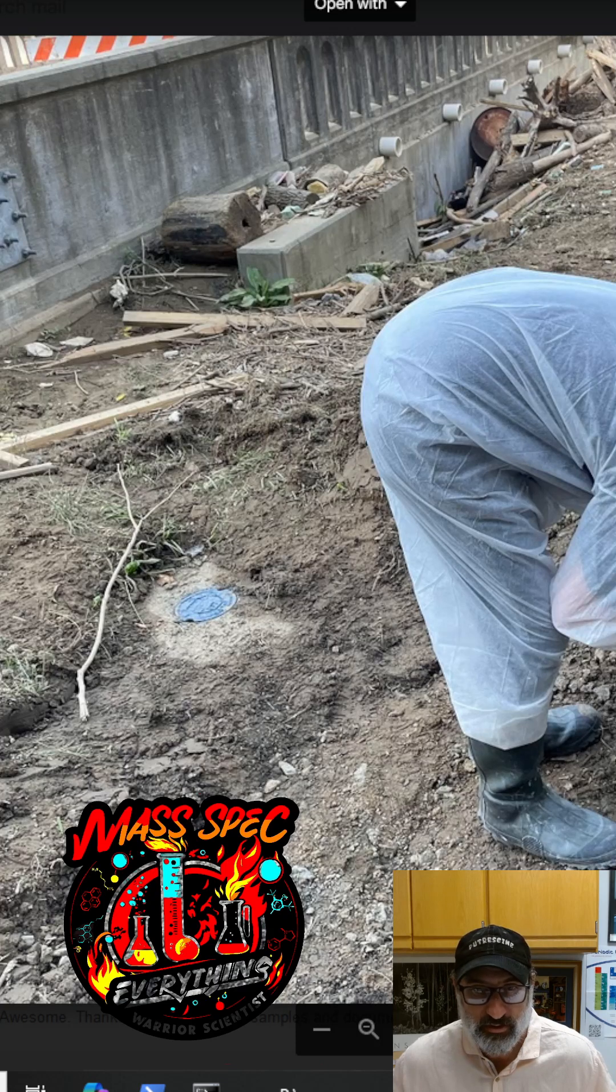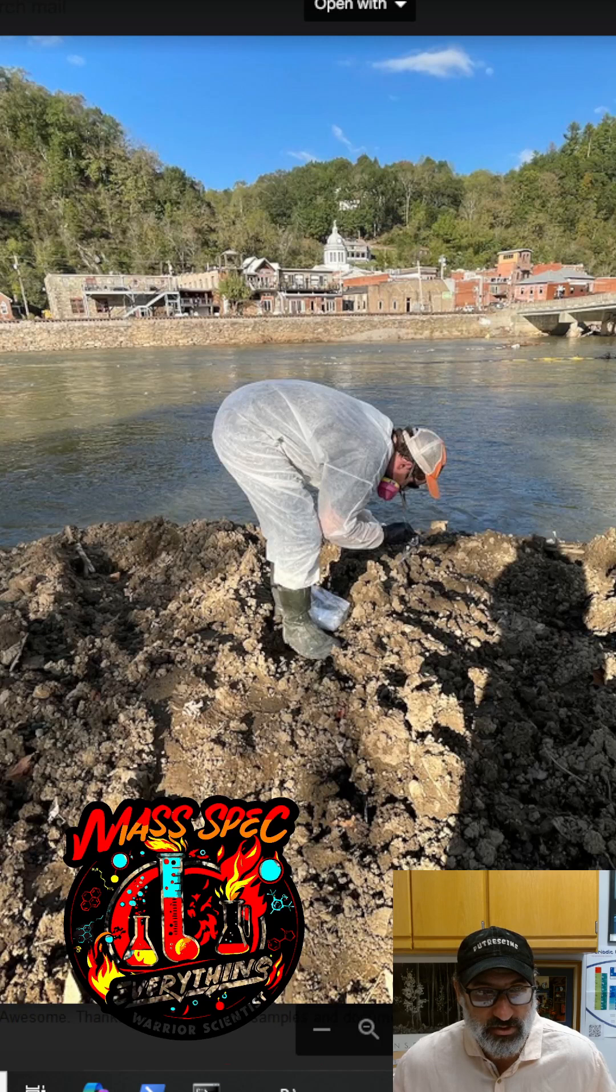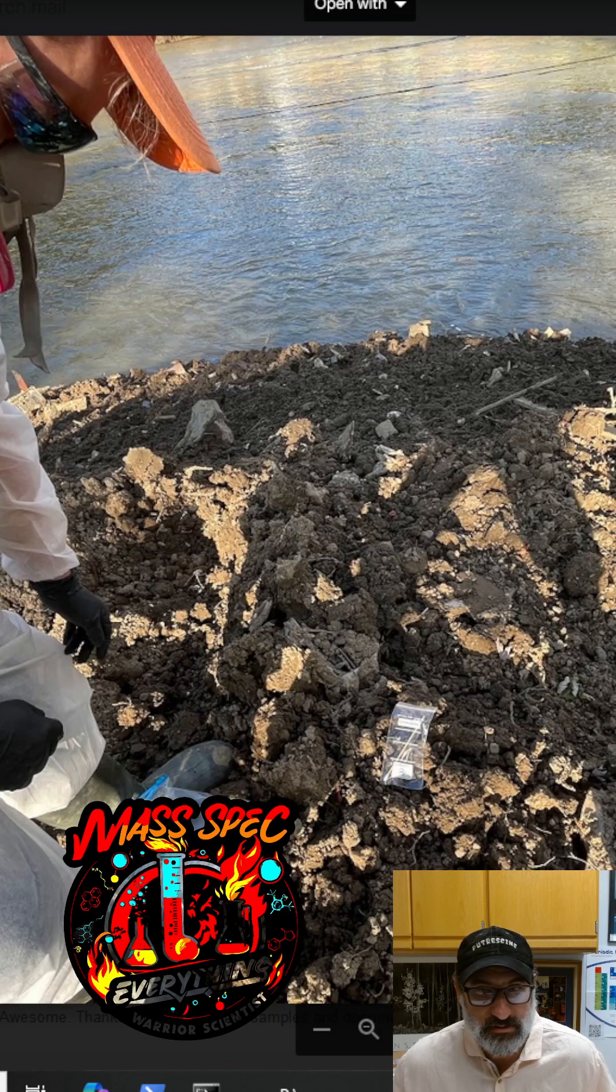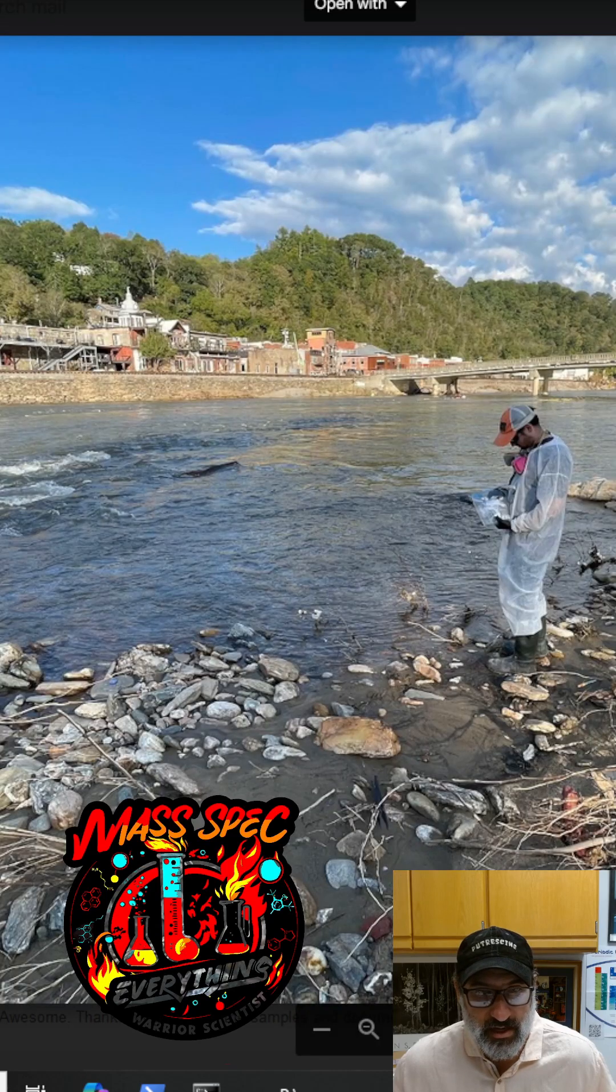So here we are, we're gathering mud. This is clearly flood mud that was brought in from the area from who knows where as the whole region flooded. Really appreciate you guys doing this and contacting me. This is the edge of the French Broad on what I think is the island potentially. This is the mud.